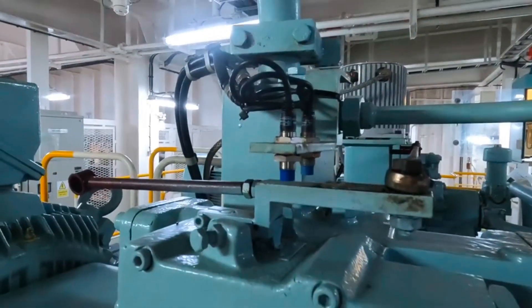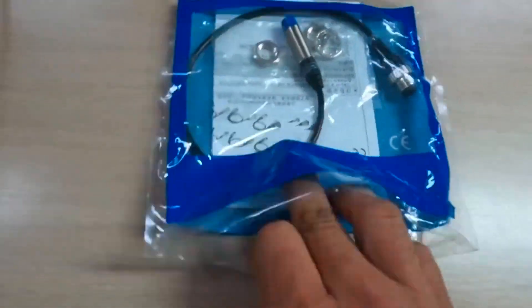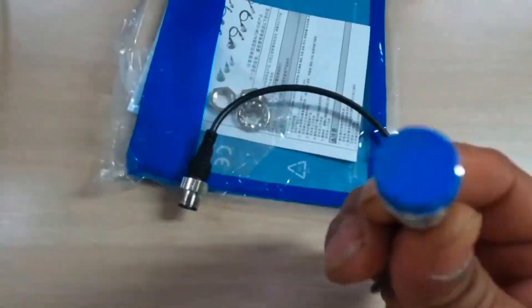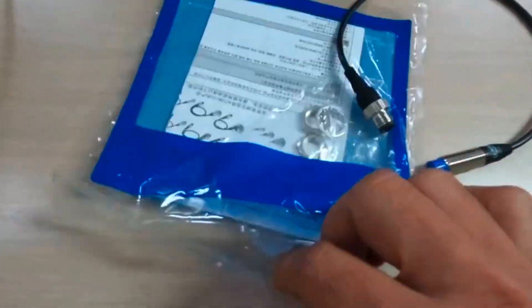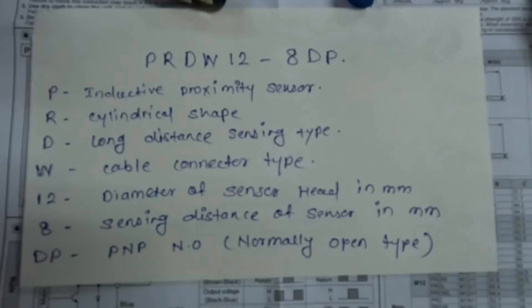Now we have given the command for port side and the light is not glowing, so basically the issue is with the sensor. Now we have the new sensor and we will change it. This is 12 to 24 volt DC, 200 milliamps.